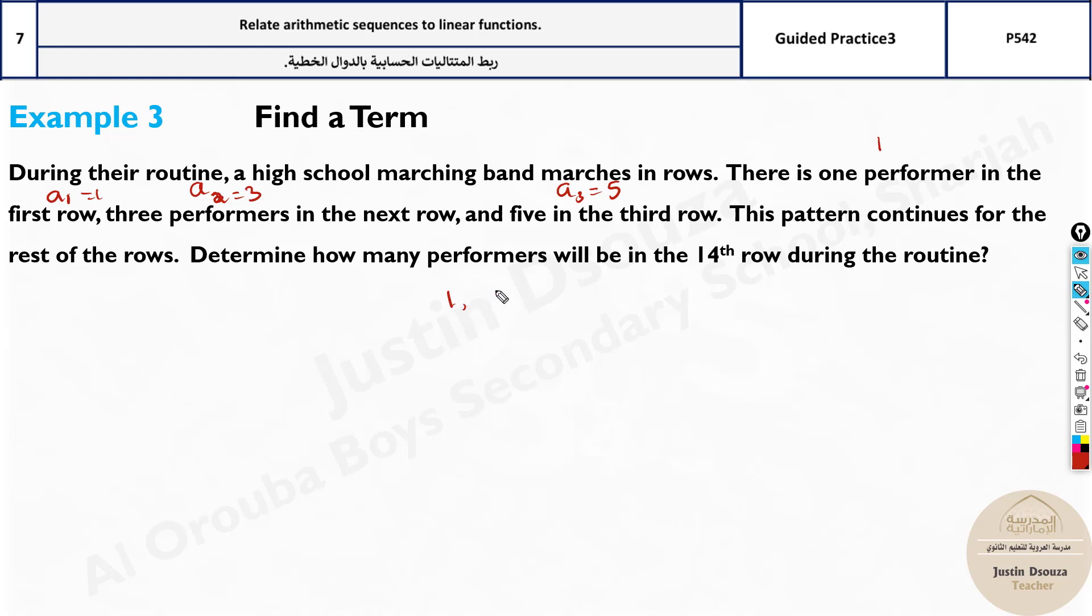So they have given a sequence: 1, 3, 5. Now, if you see the common difference here is 2. So next will be 7, 9 and so on. So this is 2 over here.